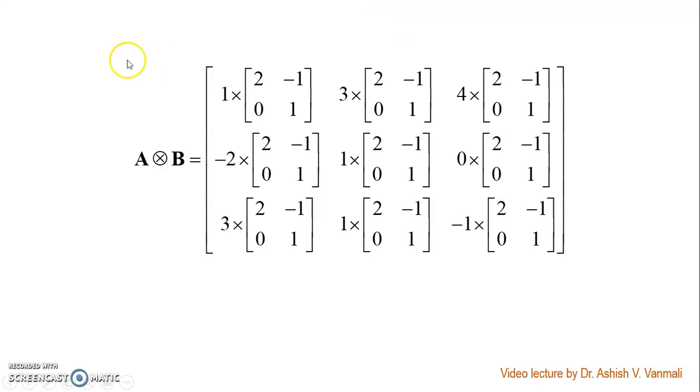When we multiply, we will be multiplying 1 with this matrix, which will give me the value 2, minus 1, 0, 1. Then 3 will be multiplied with this, giving me 6, minus 3, 0, 3. Here, 4 will get multiplied with this value, so I will get 8, minus 4, 0, 4.